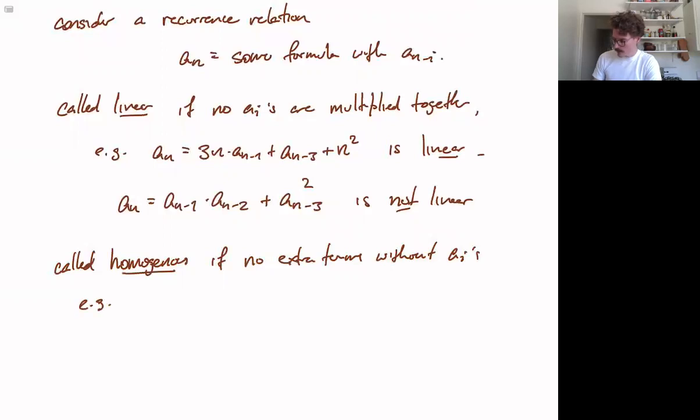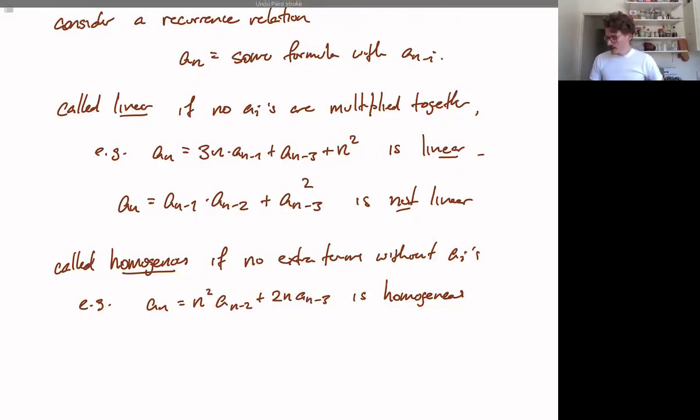For example, an equals n squared an minus 2 plus 2n an minus 3. This is homogeneous. Because, again, we're not saying that we can't multiply things by the ai's. But we are saying that we don't have any terms where it's something like n squared by itself. So each term has an a sub i in it. That is what it means to be homogeneous.